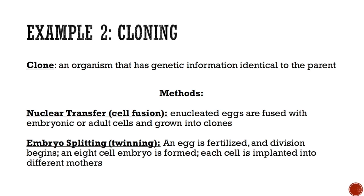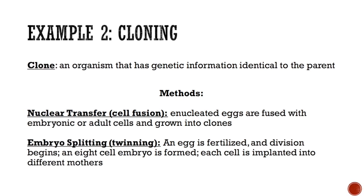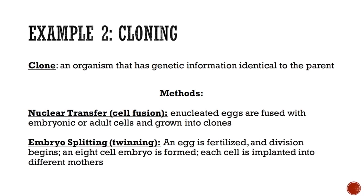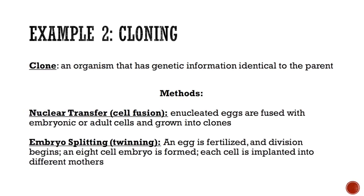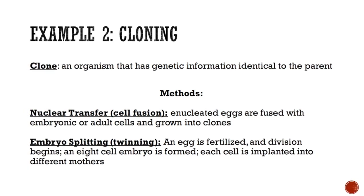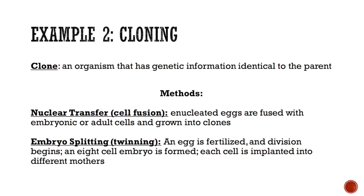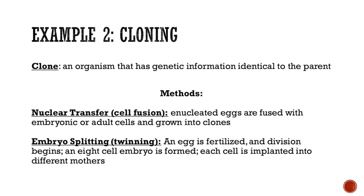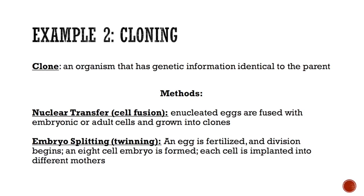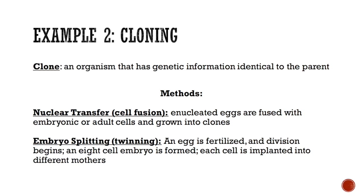The other method is embryo splitting, also called twinning, in which an egg is fertilized and division begins, then an 8-cell embryo is formed, and each cell is implanted into different mothers.